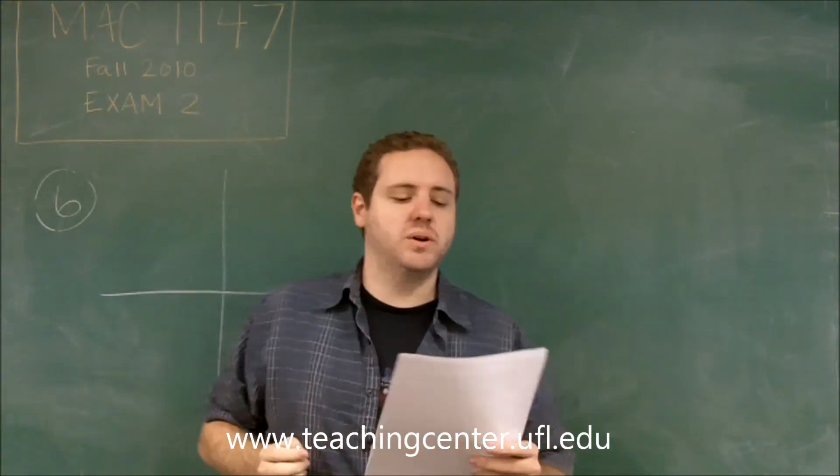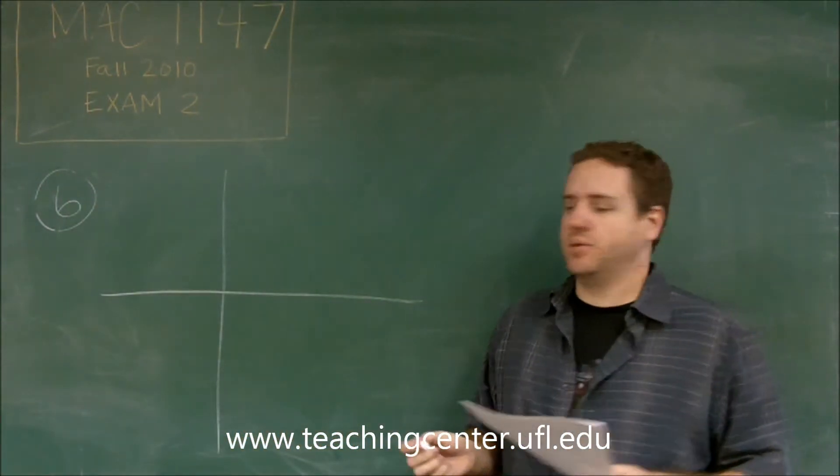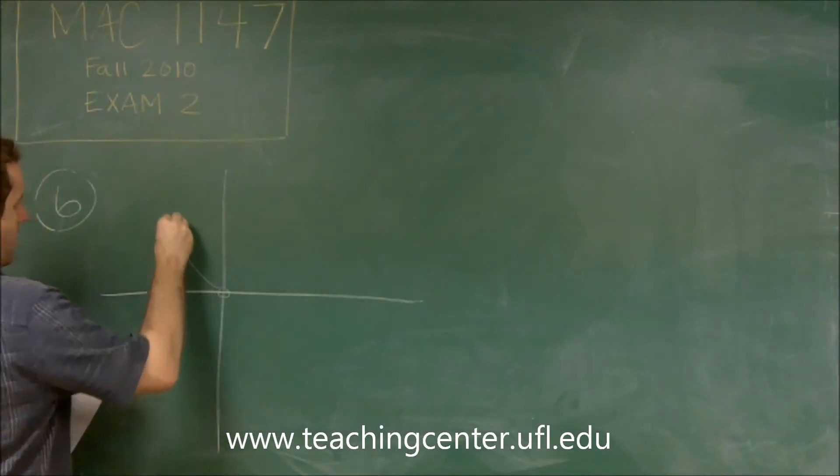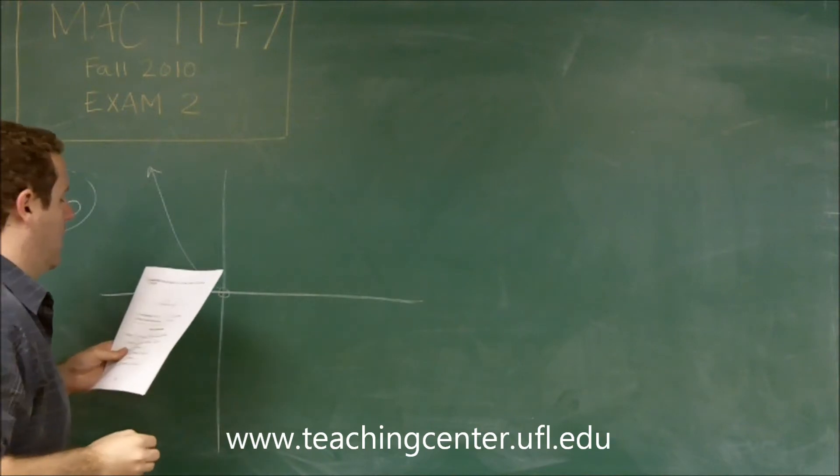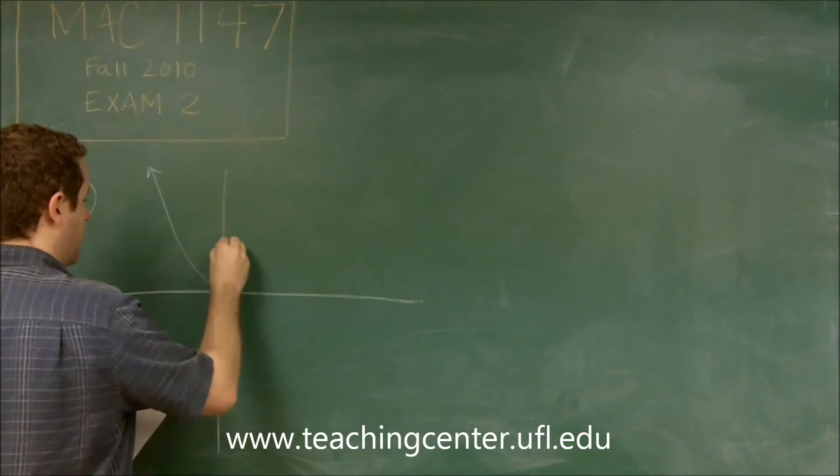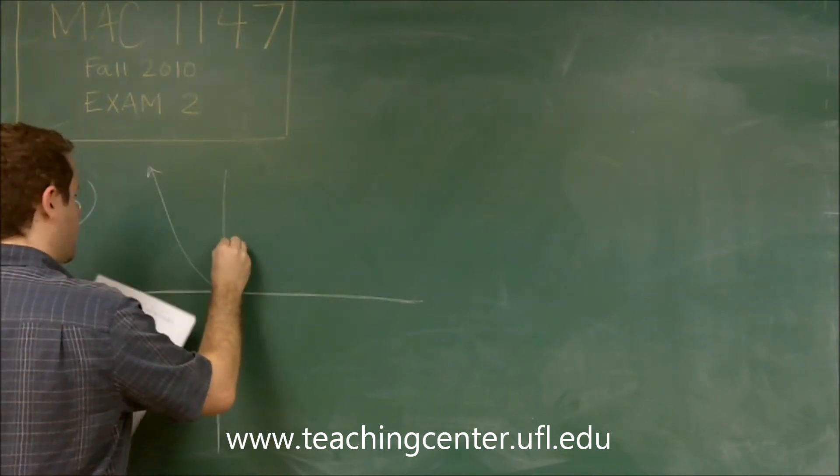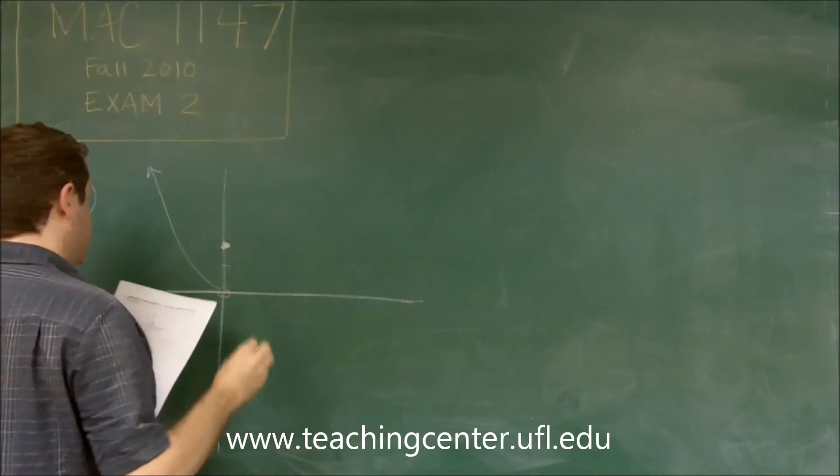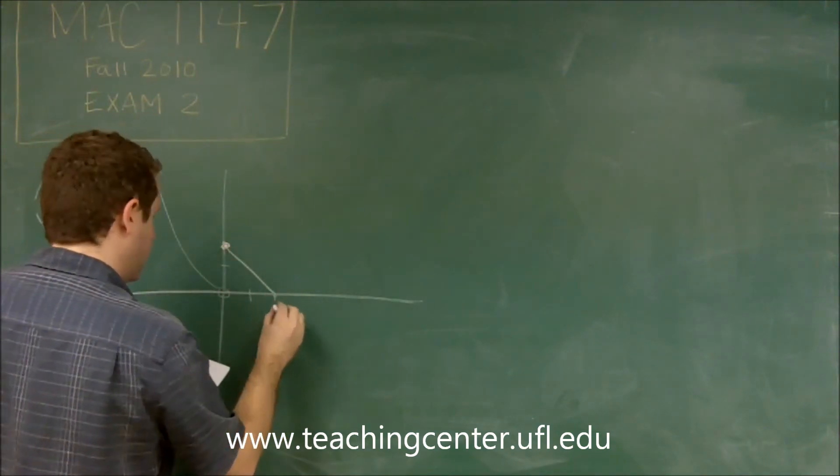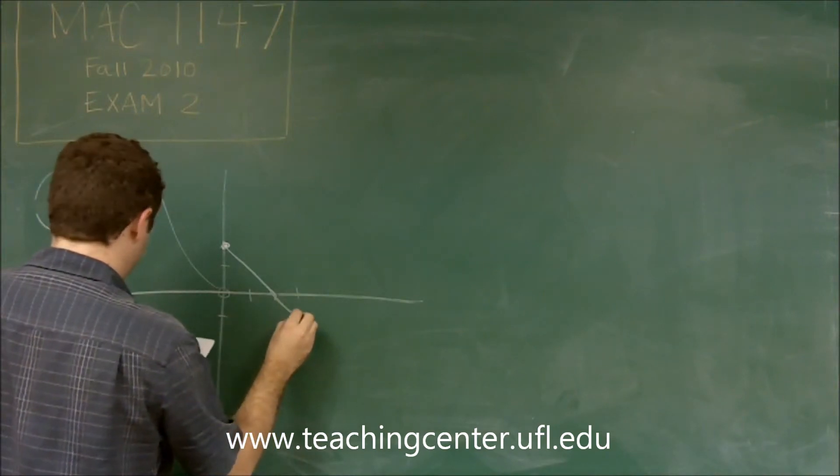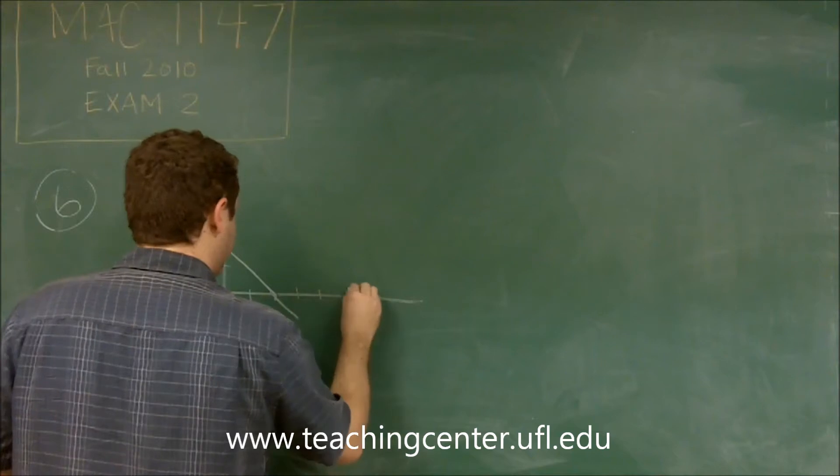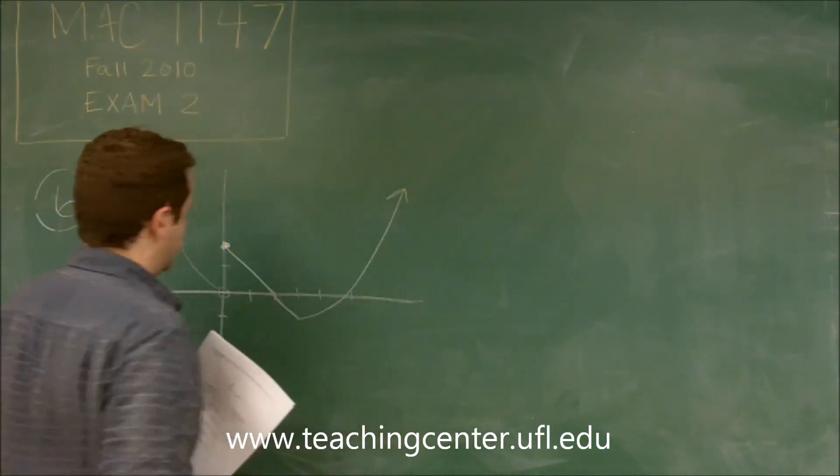At number six we have a question in which we're given a graph, so I'm going to recreate it real quick so I can illustrate my points. We have a parabola looking section starting at the origin, or coming down to the origin. We have a straight line section starting at zero two, crossing through two zero, down to three negative one, and then we have something that goes up like that.